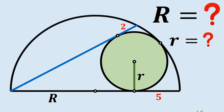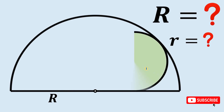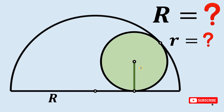Can you solve this geometry challenge? Here's the question. Given a semicircle with a radius of capital R, let's draw a circle inside of it such that this circle is tangent to our semicircle, and let's call the radius of this circle as small r.